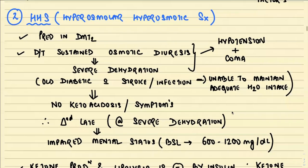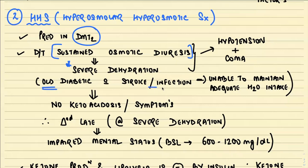The second very important acute complication is HHS — hyperosmolar hyperosmotic syndrome or state. It occurs more commonly in type 2 diabetes mellitus, and the major reason is sustained osmotic diuresis. When there is uncontrolled diabetes mellitus, this leads to severe dehydration, especially seen in old diabetic individuals with stroke or infection who are not able to maintain adequate water intake. They develop HHS, characterized by hypotension and coma.